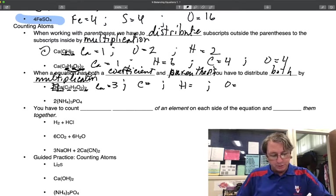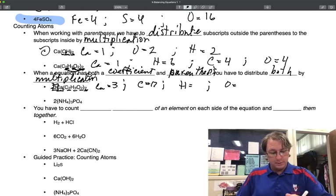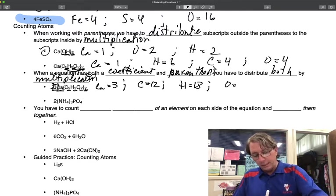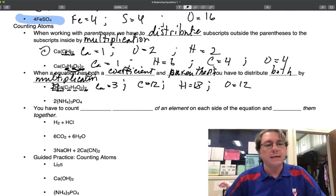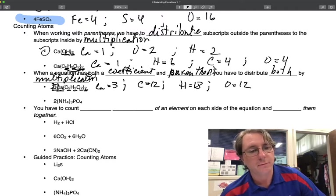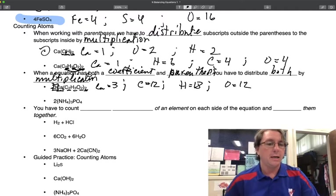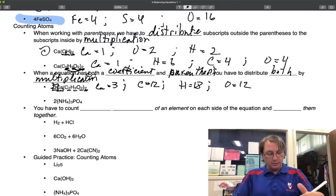Carbon is 2 times 2, outside parentheses is 4, times 3 is 12. Hydrogen is 2 times 3 is 6, times 3 is 18. And oxygen, 2 times 2 is 4, times 3 is 12. So notice the numbers get really big when they have both parentheses and a coefficient.